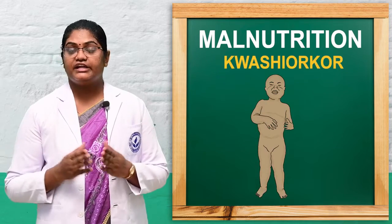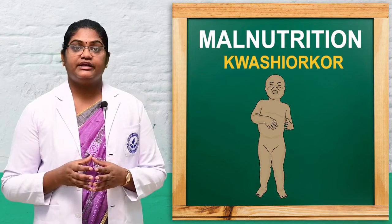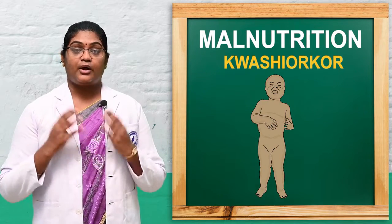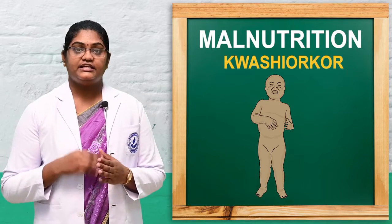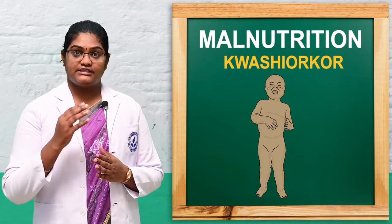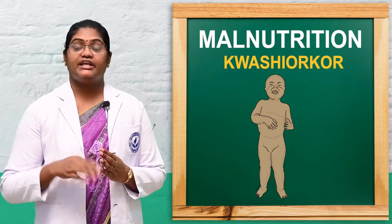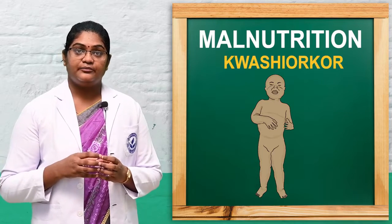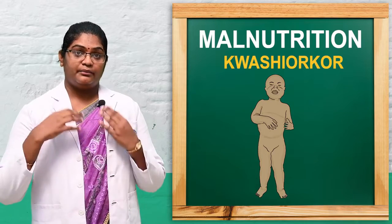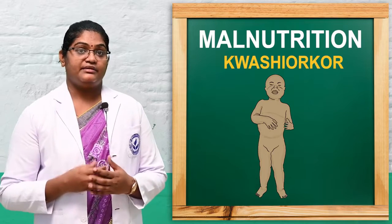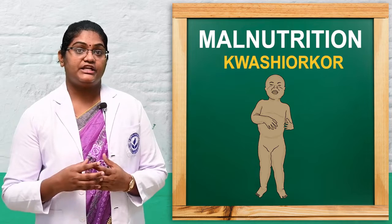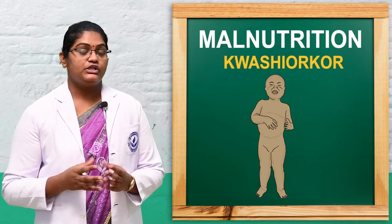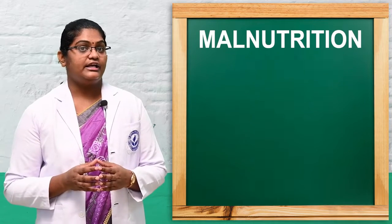The second form is kwashiorkor. Kwashiorkor is protein malnutrition, characterized by bilateral edema that gives a bloating appearance due to water retention.